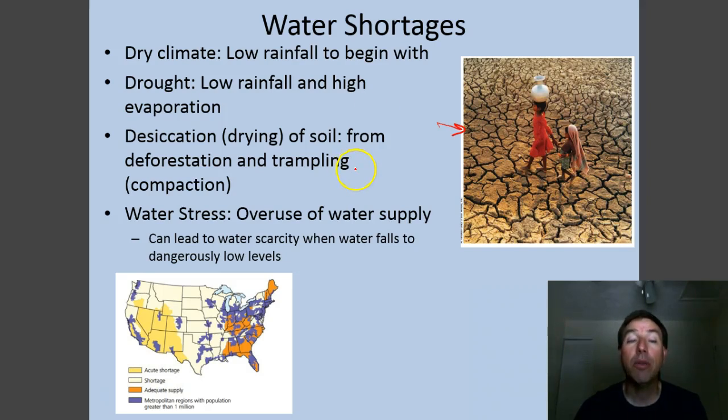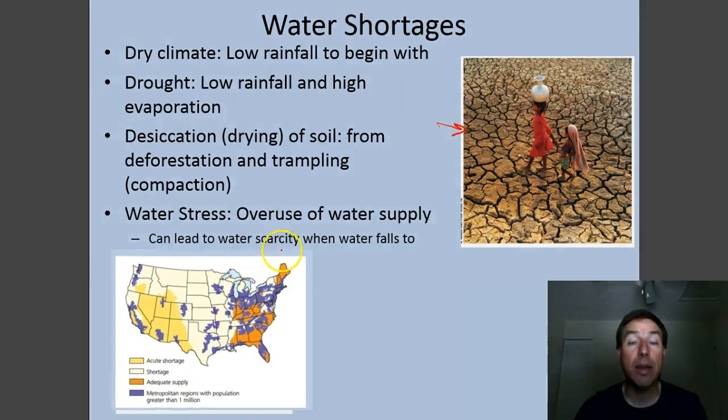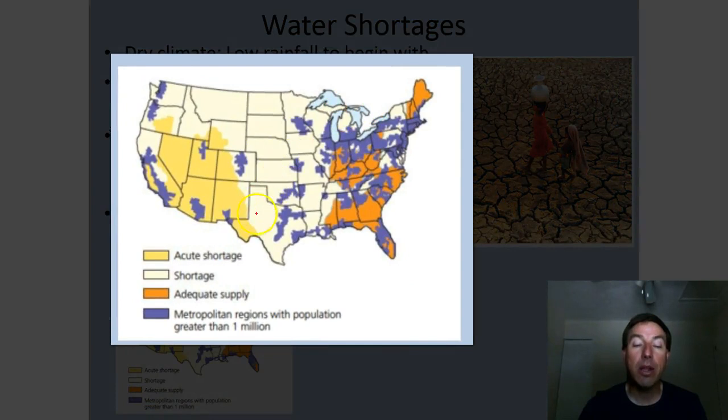You could also have desiccation when you deforest or you trample the earth and you get rid of the vegetation. This will automatically dry out the soil. And water stress, which is overuse of the water supply. If you pump too much out of the aquifer or you take too much from a reservoir, or you pipe the water where it's not sustainably done. If we look at this map down here, it shows us the United States and the water issues associated with the country as a whole.